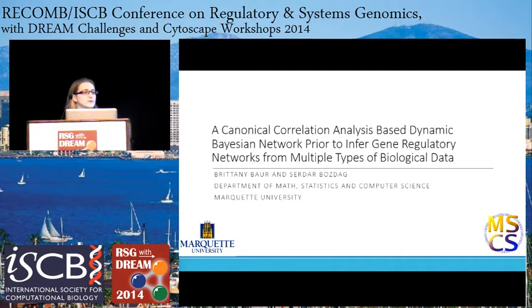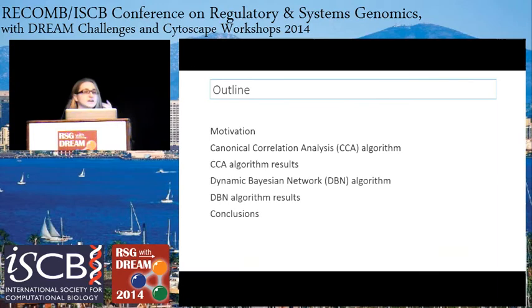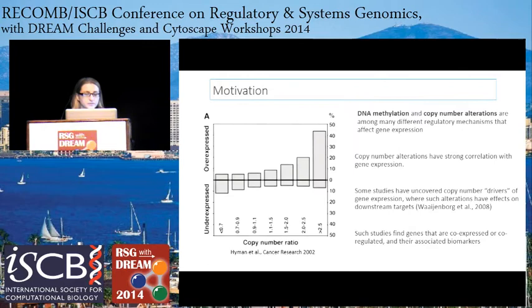Thank you for coming, and thank you to the organizing committee for inviting us out here today to talk about our research. The outline of the talk breaks down into basically two components. We developed an algorithm based on canonical correlation analysis which uses DNA methylation and copy number to infer gene regulatory networks, and then we use the results from that analysis as a prior in the dynamic Bayesian network algorithm.